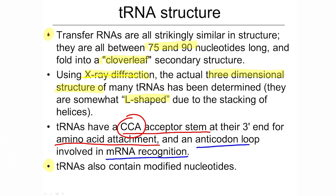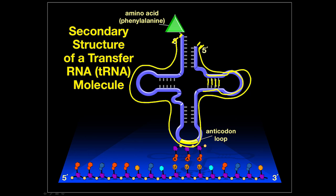Any tRNA with an AAA anticodon loop also has the amino acid phenylalanine attached to it. So UUU in a messenger RNA means phenylalanine. This is the genetic code, and we'll be discussing that in an upcoming session. The CCA acceptor stem ends up at one end and the anticodon ends up at the other end, whether you look at the secondary or tertiary structure.